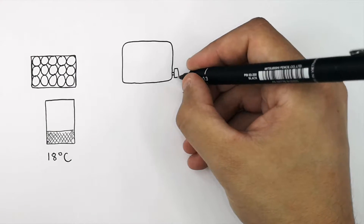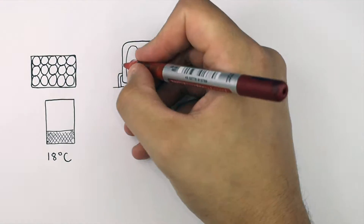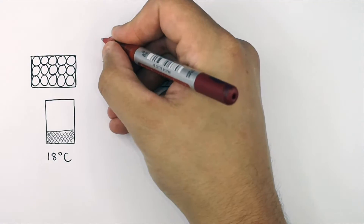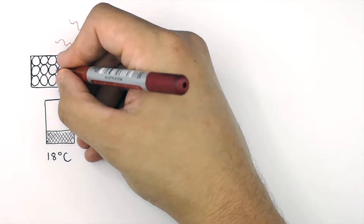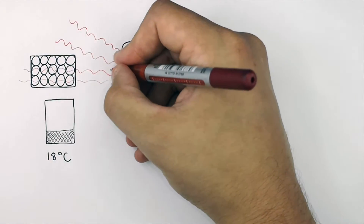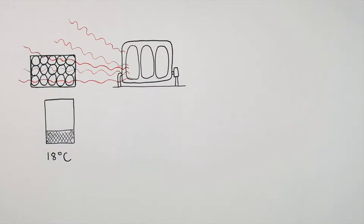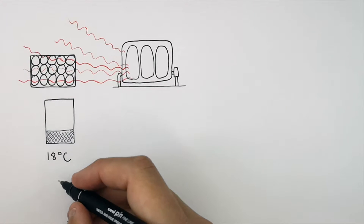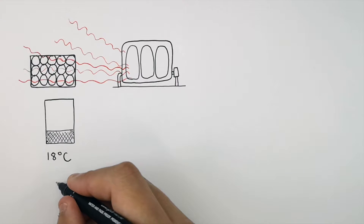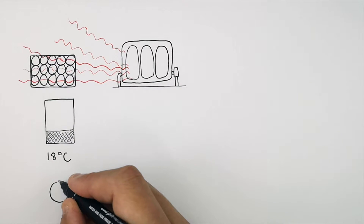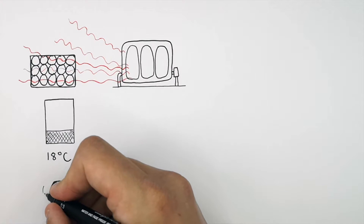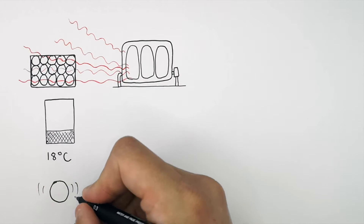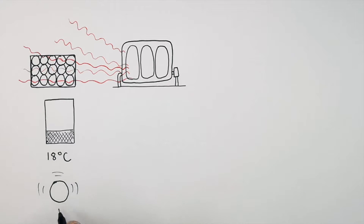What I'm drawing here is a radiator. The radiator is going to transfer energy from its thermal energy store to the thermal energy store of the object. We're now visualizing the kinetic energy store in the particles, and when the object is heated, energy will be transferred into the thermal energy store of the object, spread across the kinetic energy store of the particles.